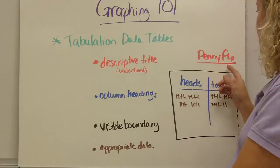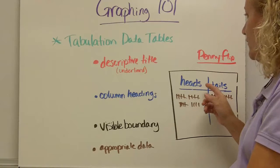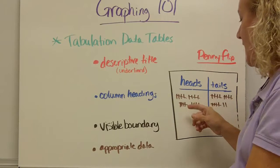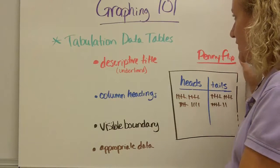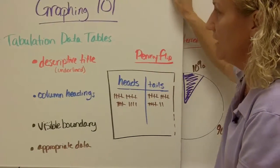So here we have an example where we flipped pennies. You have heads and tails. Those are my column headings. Penny flip is my descriptive title. And there's my data and my visible boundary. So that's what's required for a tabulation data table.